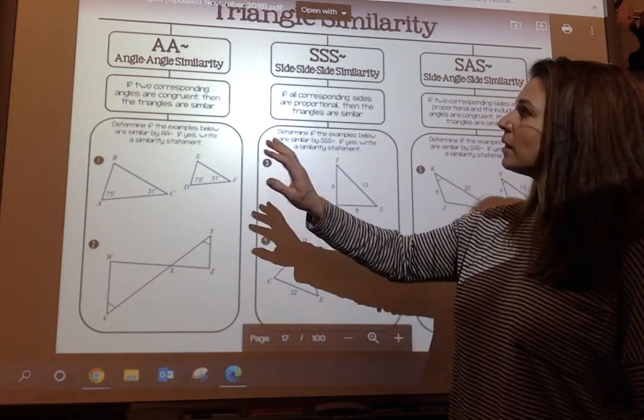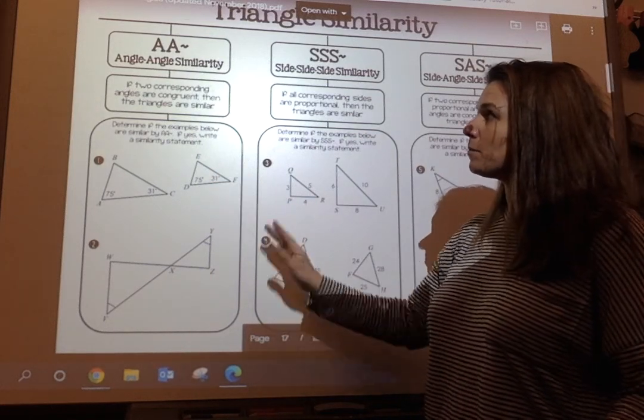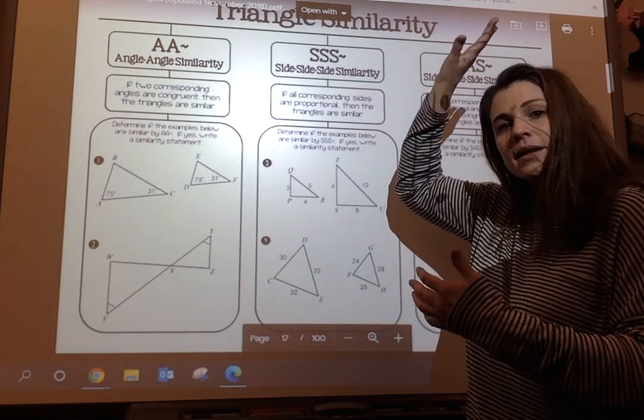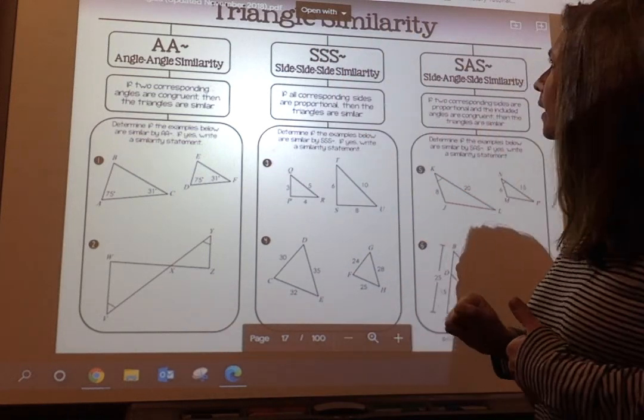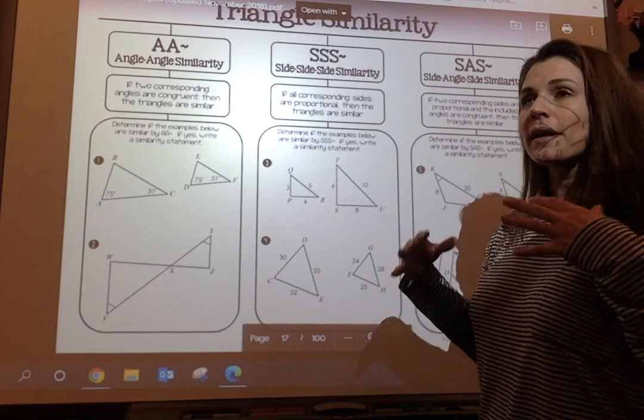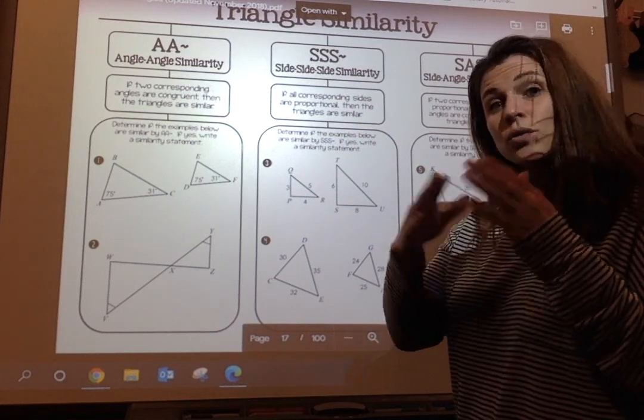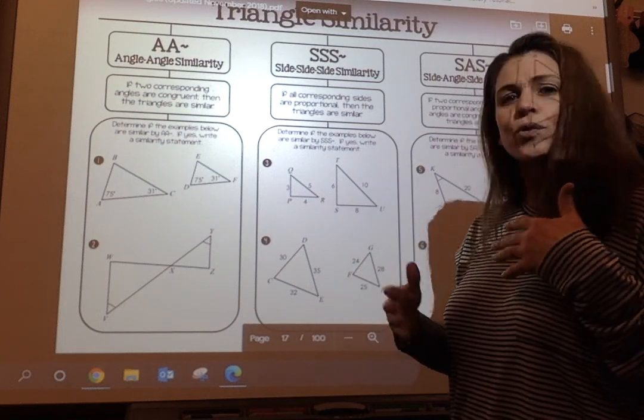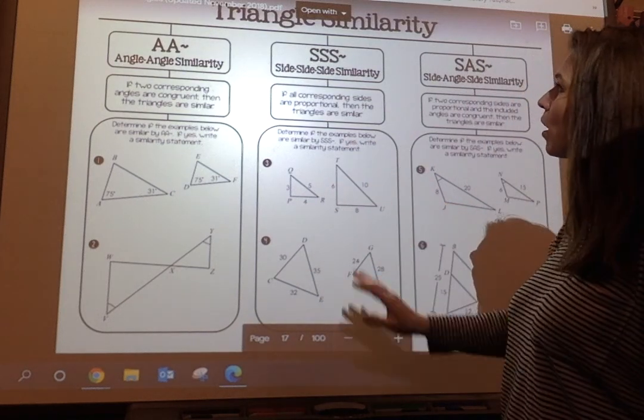So we're going to go through these real quick, and I love this in your notes because it has everything in one place: angle-angle similarity, side-side-side similarity, and side-angle-side similarity. So we already know that similar polygons have congruent angles and proportional sides, so we're just going to use that knowledge and we'll walk through this together.